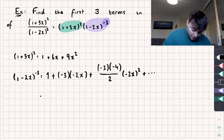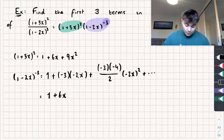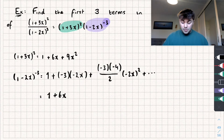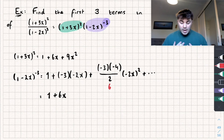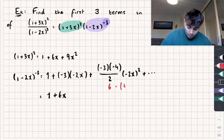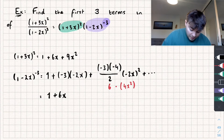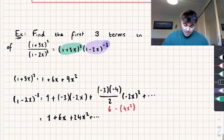Simplifying that, we get 1 + 6x, and for the third term: (-3)×(-4) = 12, divided by 2 is 6, multiplied by (-2x)² which is 4x², giving 6×4 = 24. So we get 1 + 6x + 24x² + ... Now we have the green part, (1+3x)² = 1 + 6x + 9x², and the purple part expanded as this sum, and we just need to multiply them together.